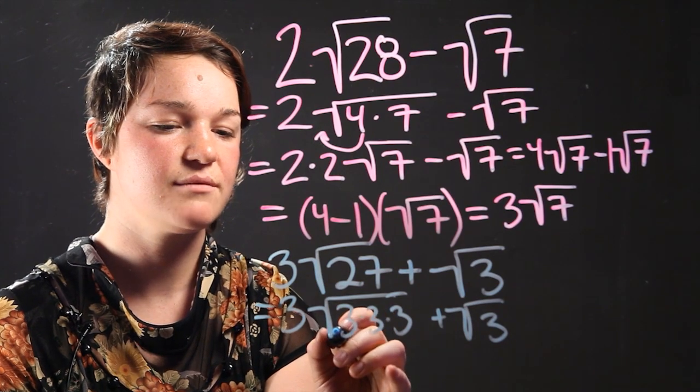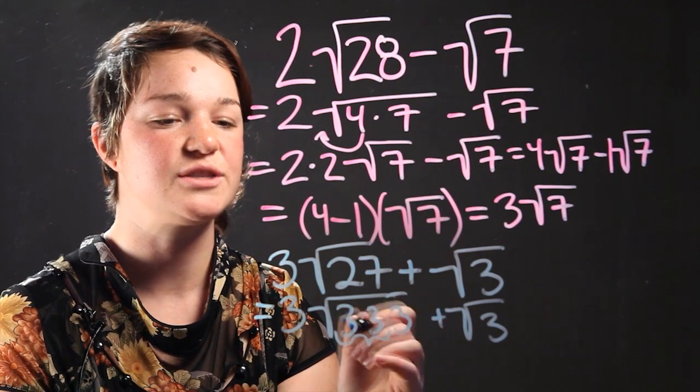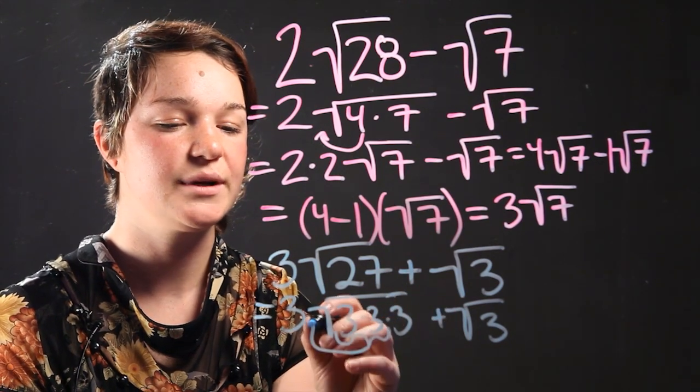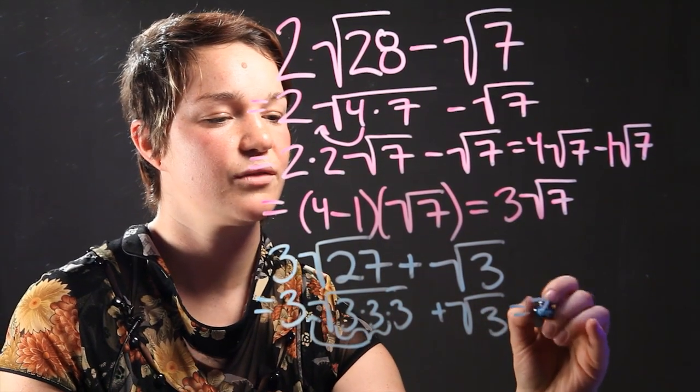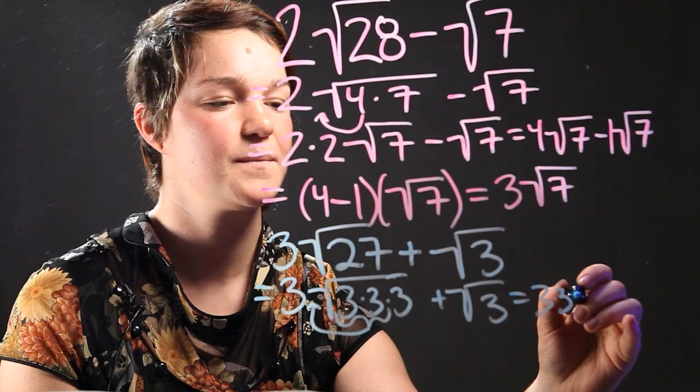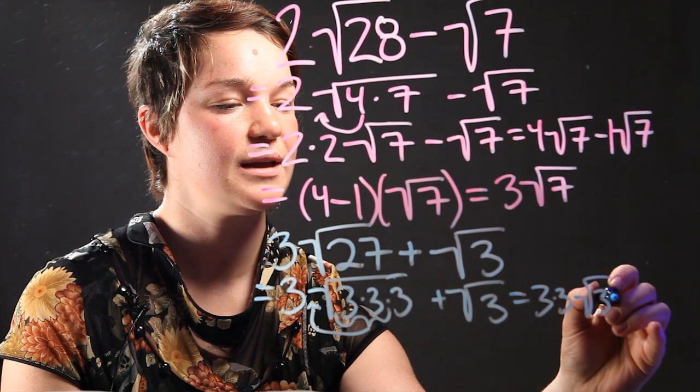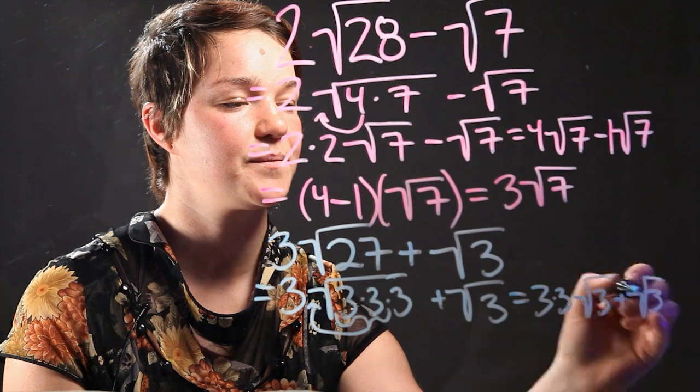So within the radical sign, we have 3, which is multiplied by itself. We're going to take it outside. And this becomes 3 times 3 or 9 times the radical 3 plus square root of 3.